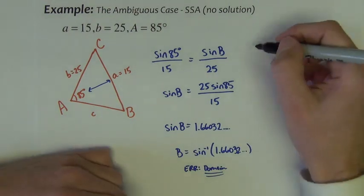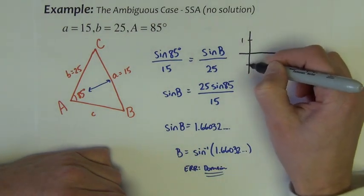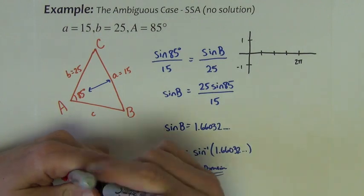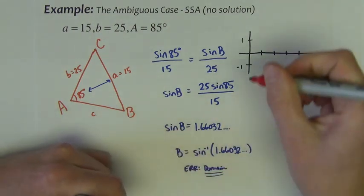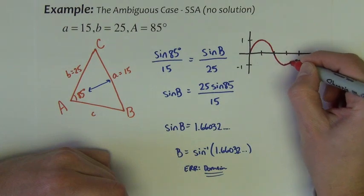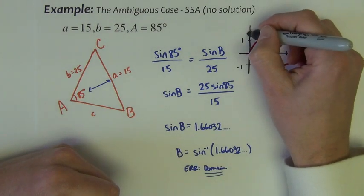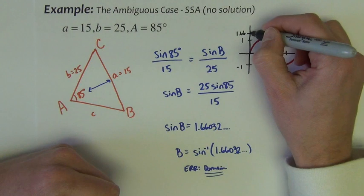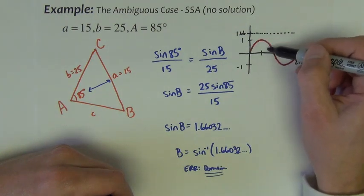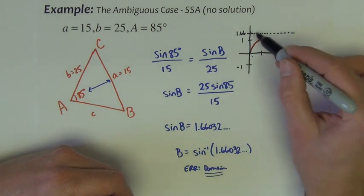Here's another way to visually see why it's not possible. If I were to graph a sine function, recall that the sine function is going to look kind of like this. We are trying to find at which angle do we have a sine value of 1.66. That's way up here. Notice that the sine curve never touches 1.66.